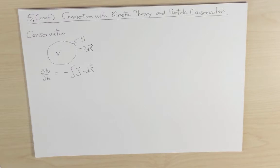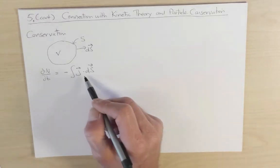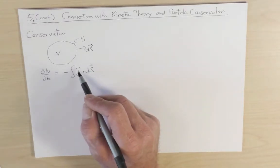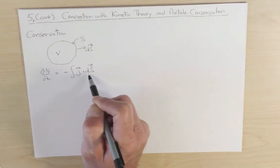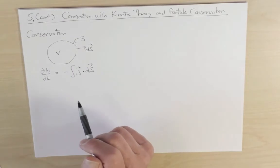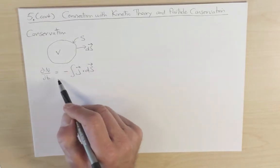Notice the sign here that if we have an outward normal and an outward going flux, that means that the particle number is going down. So for j parallel to ds, outward flux, the number of particles is decreasing, and so this should be with a minus sign.